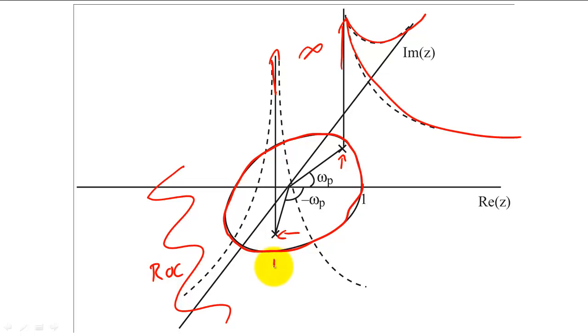In this example, the unit circle is closest to the poles here and here. If we mapped out our estimate of the magnitude of the filter plot, we would guess that the filter's magnitude would be greatest near omega p,